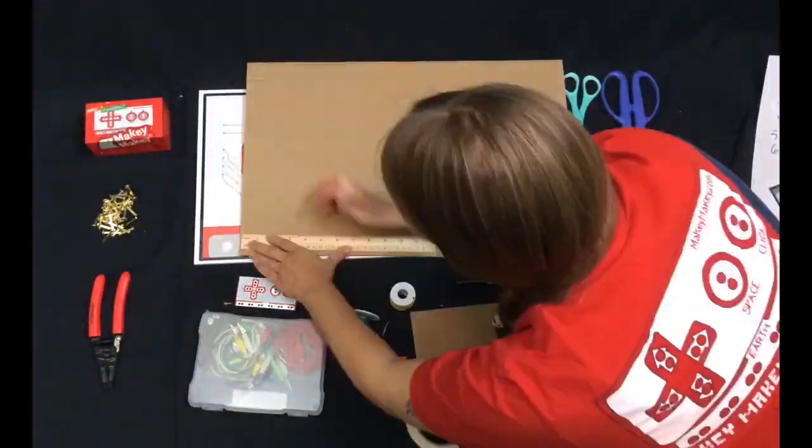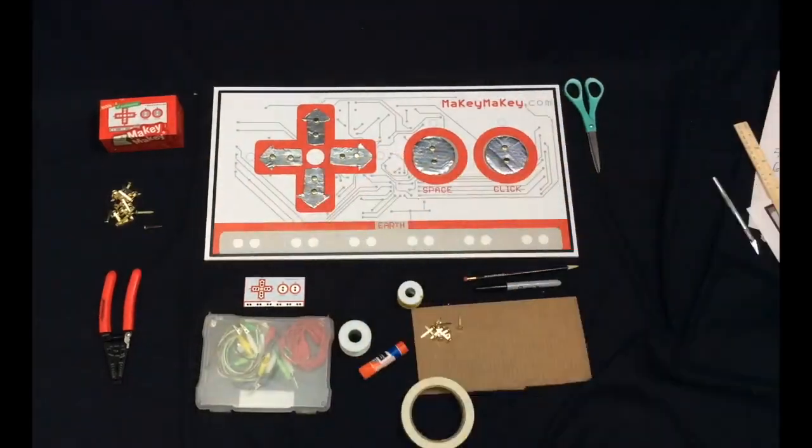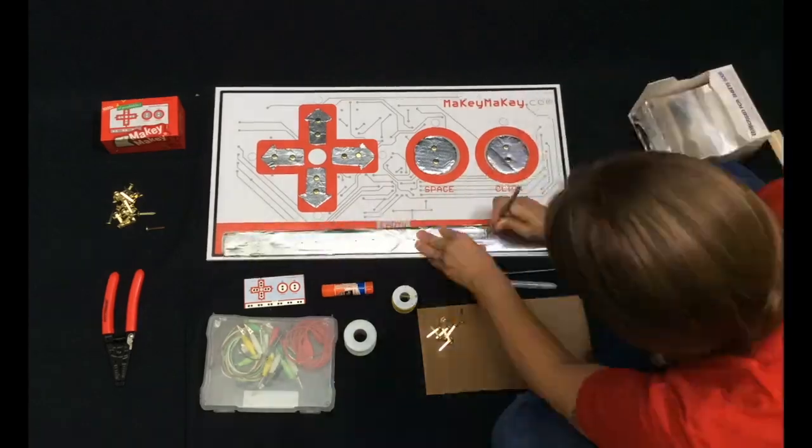Create your ground or earth connection by measuring with a ruler and cutting out another long strip of cardboard. You'll cover it with foil, just as you did with your key presses, and use the copper brads to place it.